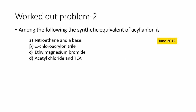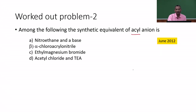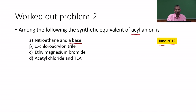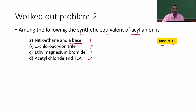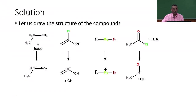The next problem is similar: instead of a formyl anion, we seek the acyl or acetyl anion equivalent. The choices are nitroethane with a base, alpha-chloroacetonitrile, ethyl magnesium bromide, and acetyl chloride with triethylamine. This question was asked in June 2012. From the previous problem, we can deduce that nitroethane may be the probable answer.